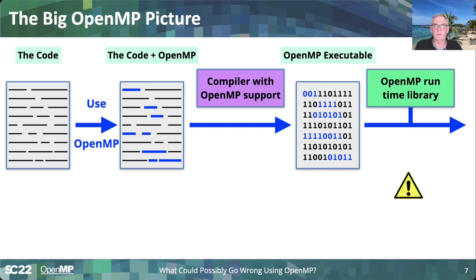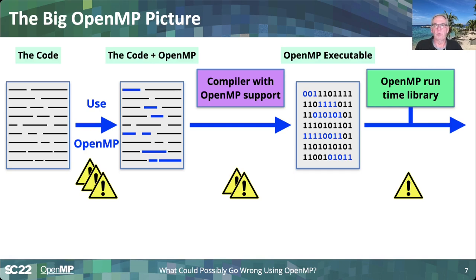I identified three different places where things could go wrong. It could go wrong in the OpenMP runtime library — there could be a bug — but that's extremely unlikely, though you can never exclude it. What could also happen is a glitch in the compiler, especially for newer features that haven't been well tested. But by far, the majority of issues in an OpenMP program are at the user level: you made some sort of mistake, and as a result you get the wrong answers. That's really where most of the errors come from, and this presentation will give you tips to avoid those mistakes.